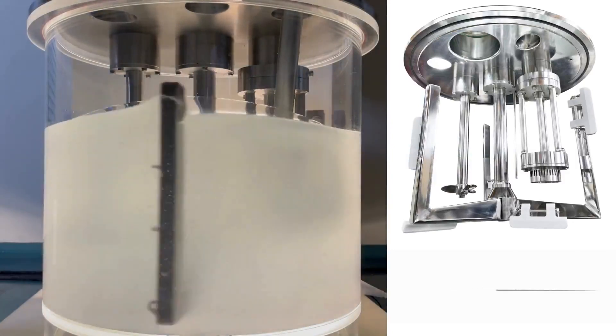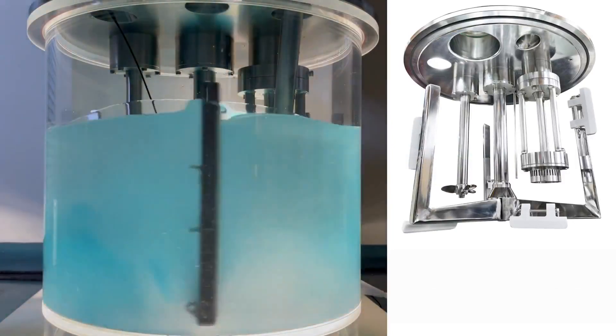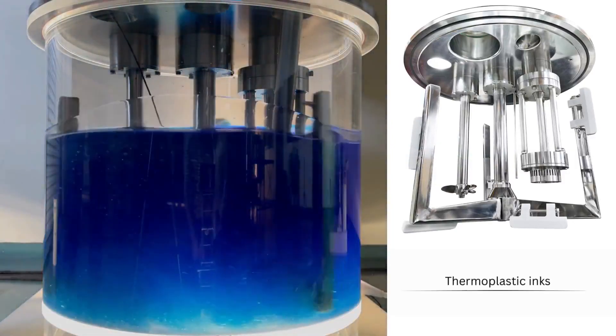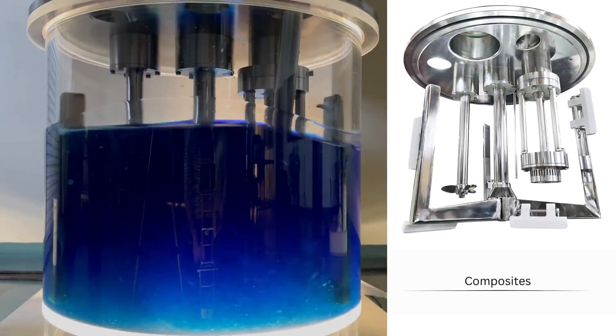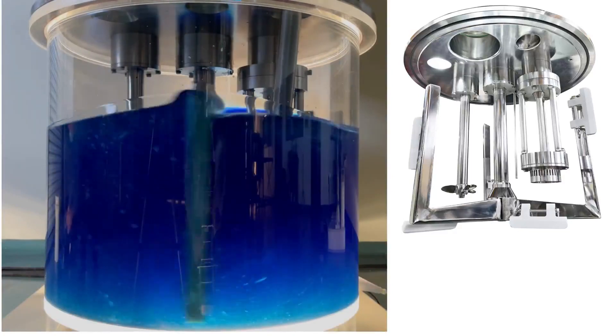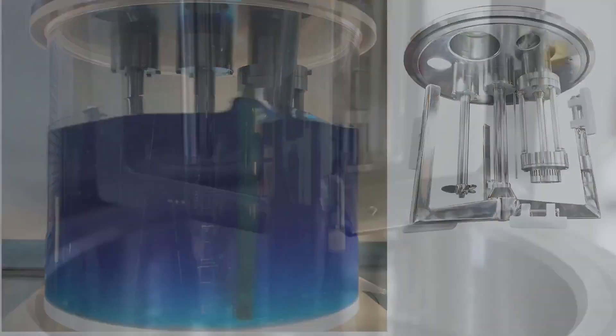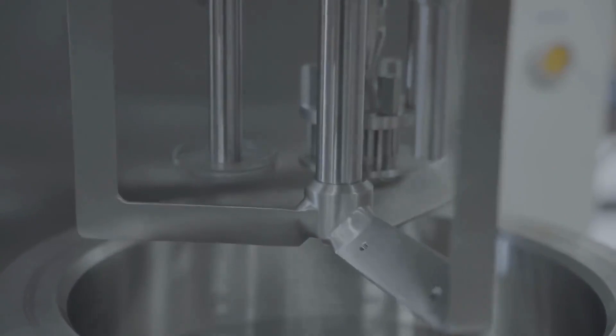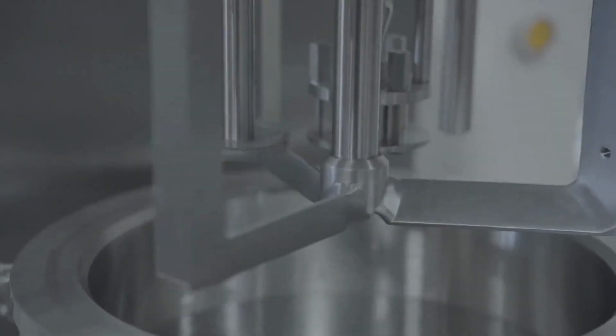Ross multi-shaft mixers can easily handle thick slurries, pastes, gels, and suspensions and offer robust performance of viscous materials such as plastosols, thermoplastic inks, rubber blends, composites, and resins. With their ability to mix under vacuum and provide temperature control, these mixers ensure superior dispersion, emulsification, and homogenization.